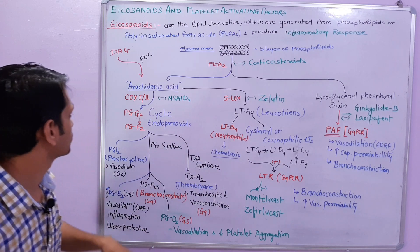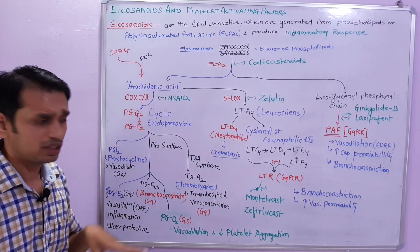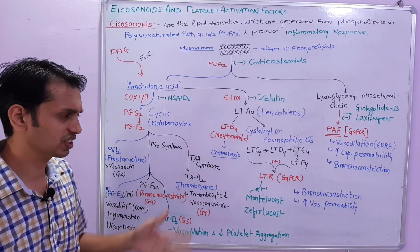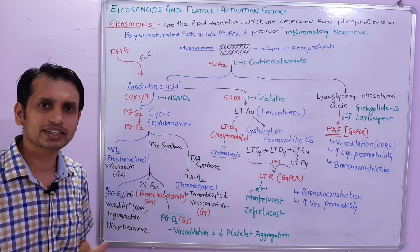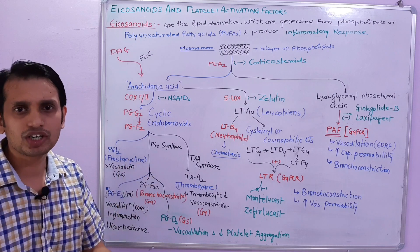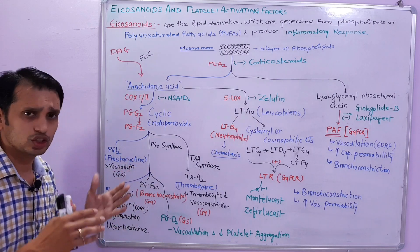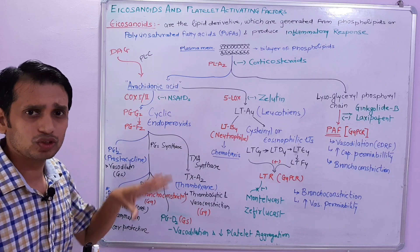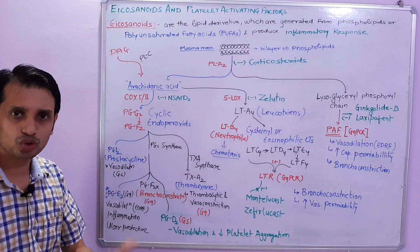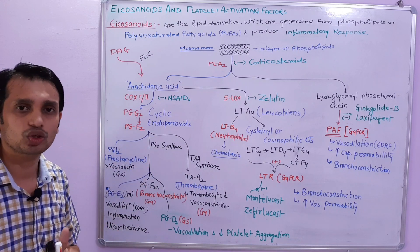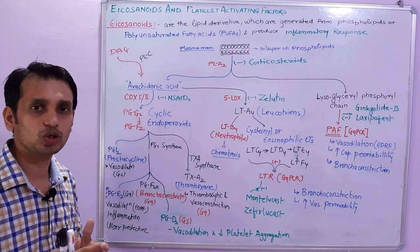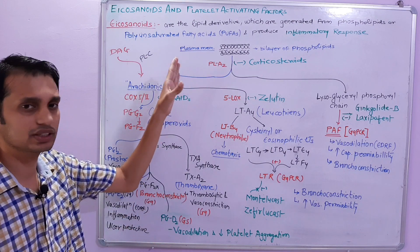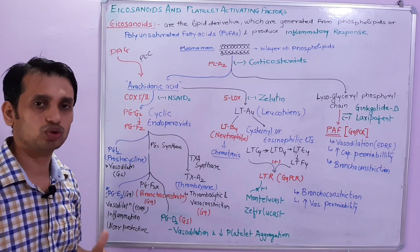Now come to the other prostanoids and thromboxanes. Prostaglandins, thromboxanes, and leukotrienes are all inflammatory molecules. When there is tissue injury, the plasma membrane can break down, and through phospholipase A2 enzyme, arachidonic acid is activated.